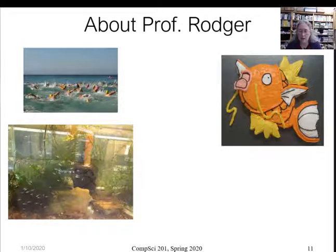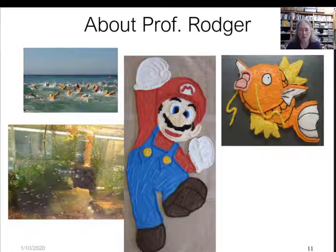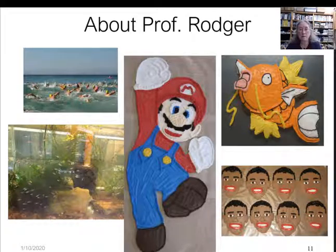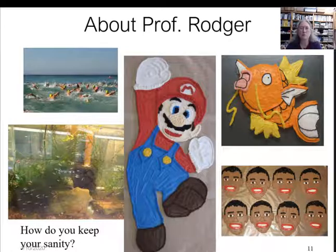This is a cake — I like to make cakes. This is a Pokémon cake called Magikarp. I also like to make cookies. This is a two-foot-high cookie of Super Mario, and I've also made Obama cookies for my son on his birthday. The takeaway: you should find a hobby or exercise to keep your sanity, so you don't just work — you'll work a lot in this class, but have something else to do too.